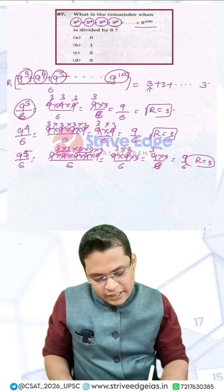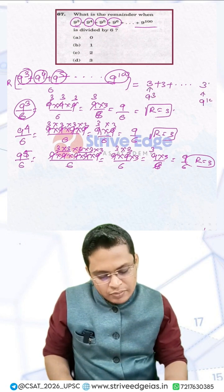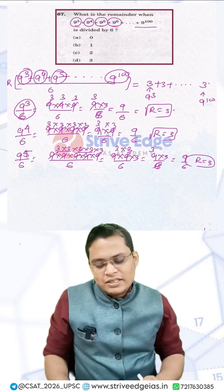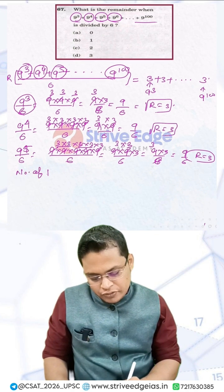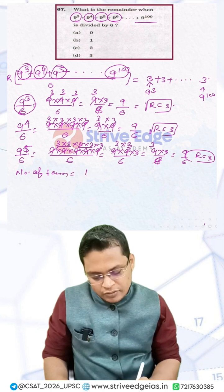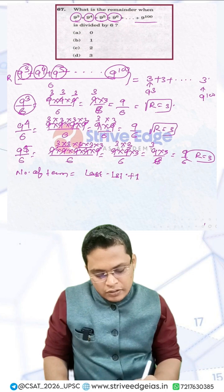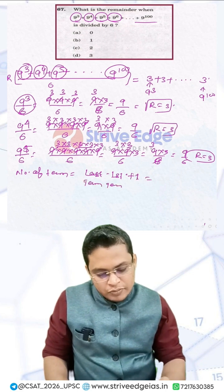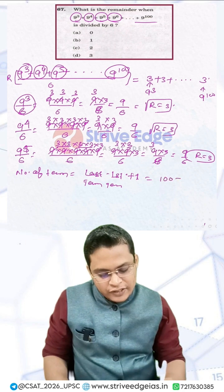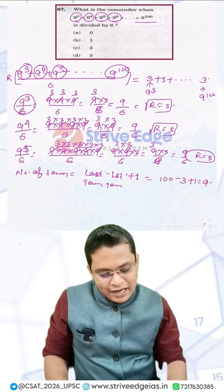The series starts from 9³ and goes up to 9¹⁰⁰. To find the number of terms, we use the formula: last term − first term + 1. That gives 100 − 3 + 1 = 98 terms.